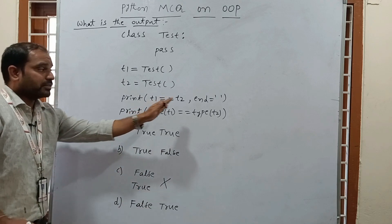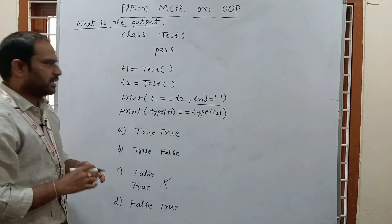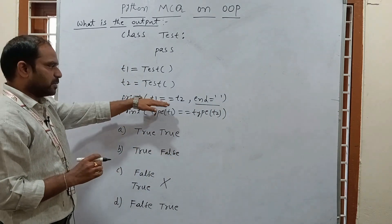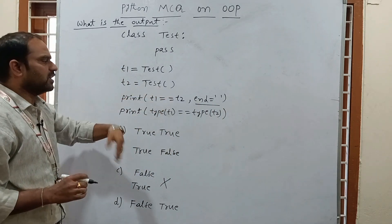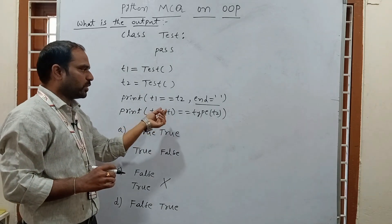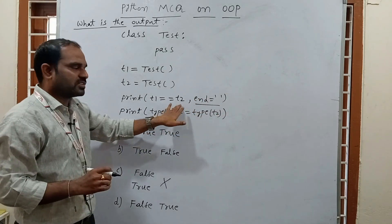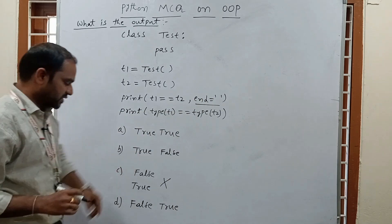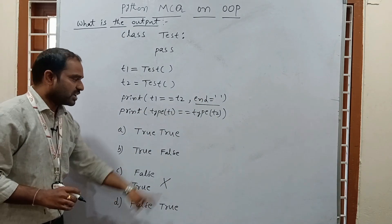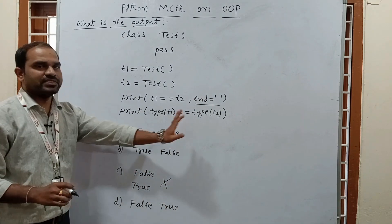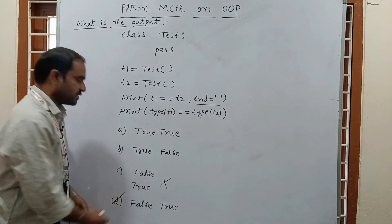When we use 'end', this print statement executes and the next print statement follows immediately after. So first 'false' is printed, and then 'true' is printed — that is the correct answer.